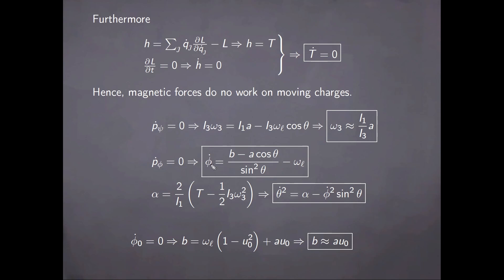In fact, this is just a case of Larmor's theorem that we've previously discussed. And in analogy with the case of the heavy symmetrical top, we can define a constant alpha given by the expression here. It does not contain the total energy of the system, since in the set of assumptions we work with here we do not know how to write the total energy, but it contains the kinetic energy which is separately conserved. And in terms of this constant, by complete analogy with the case of the heavy symmetrical top, we can write an equation of motion for the angle theta.